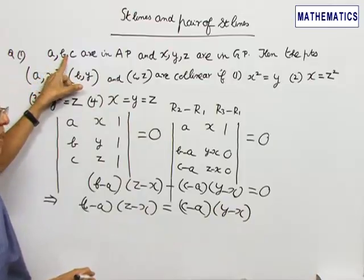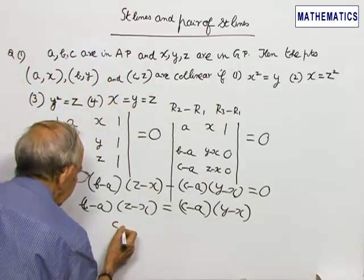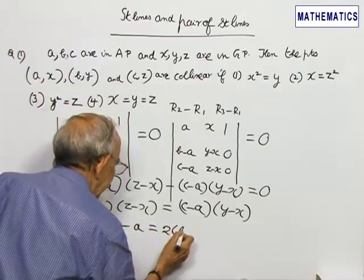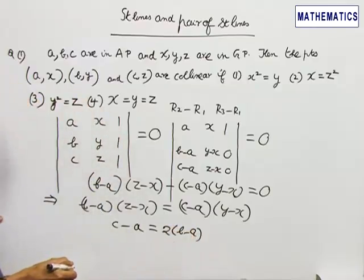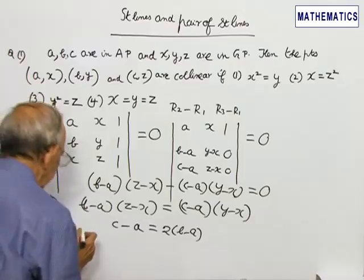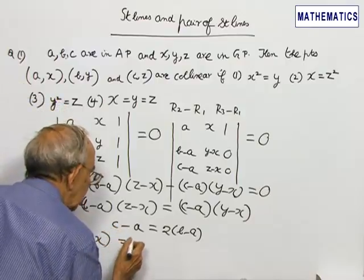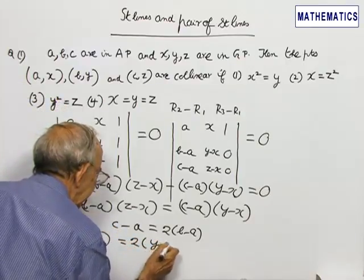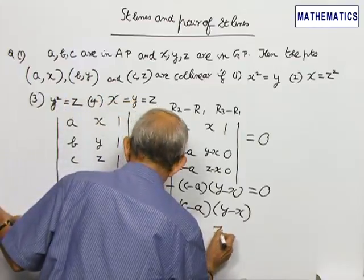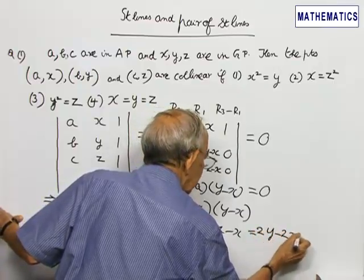Since you are given that A, B, C are in AP, the difference C minus A is twice B minus A. So this further reduces to Z minus X is equal to 2Y minus 2X.